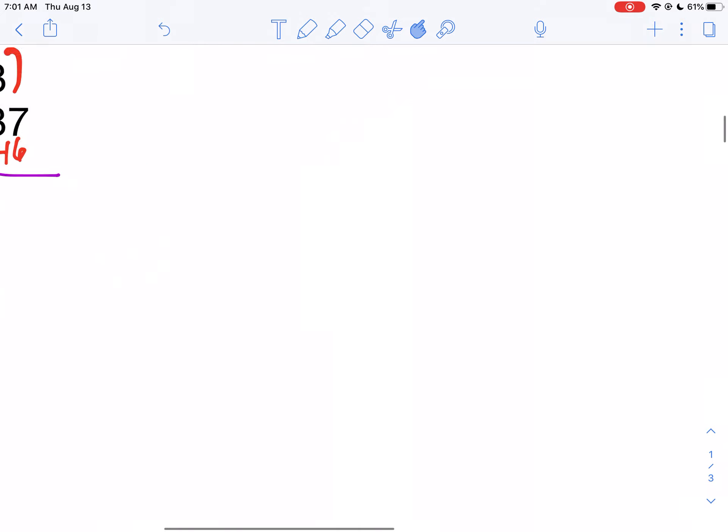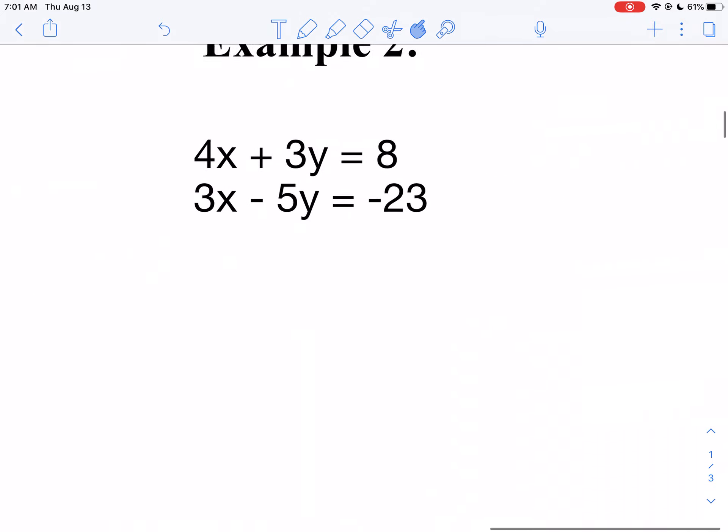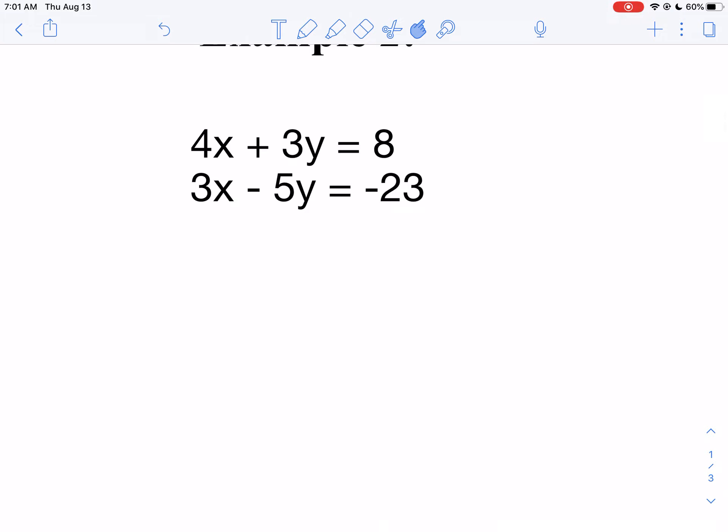Let's take a look at another example. Now in this example, notice you can't multiply anything to change 3x into 4x. I can't multiply by anything to change 3y to 5y. So here's what you're going to do. You're going to multiply both equations.